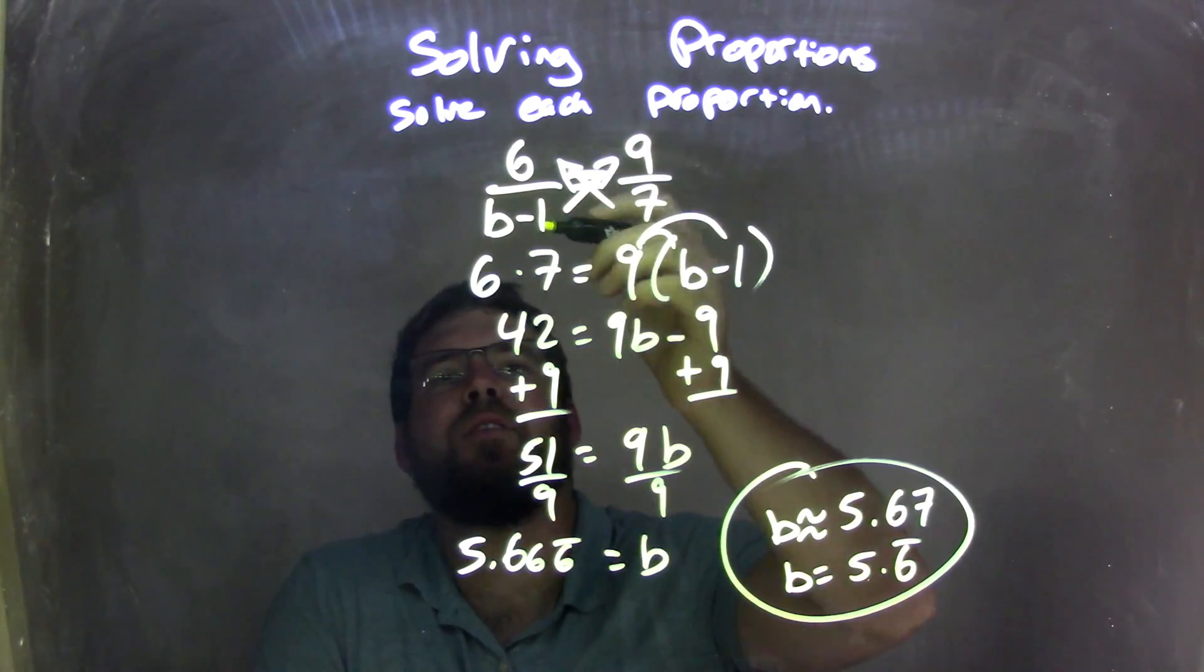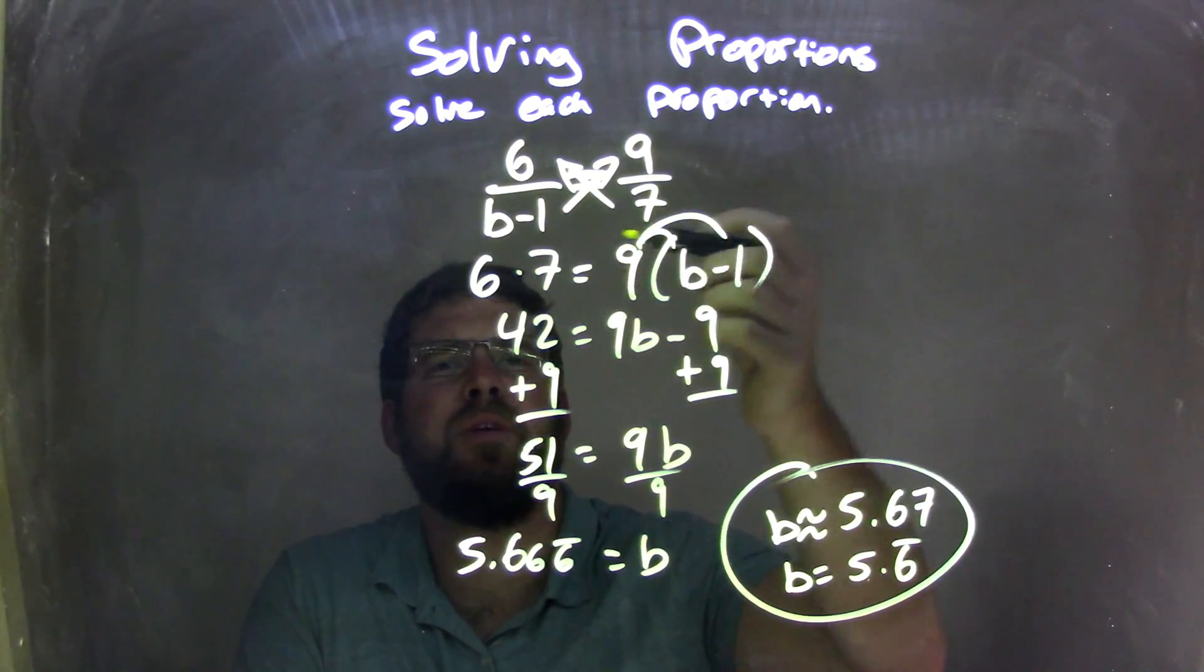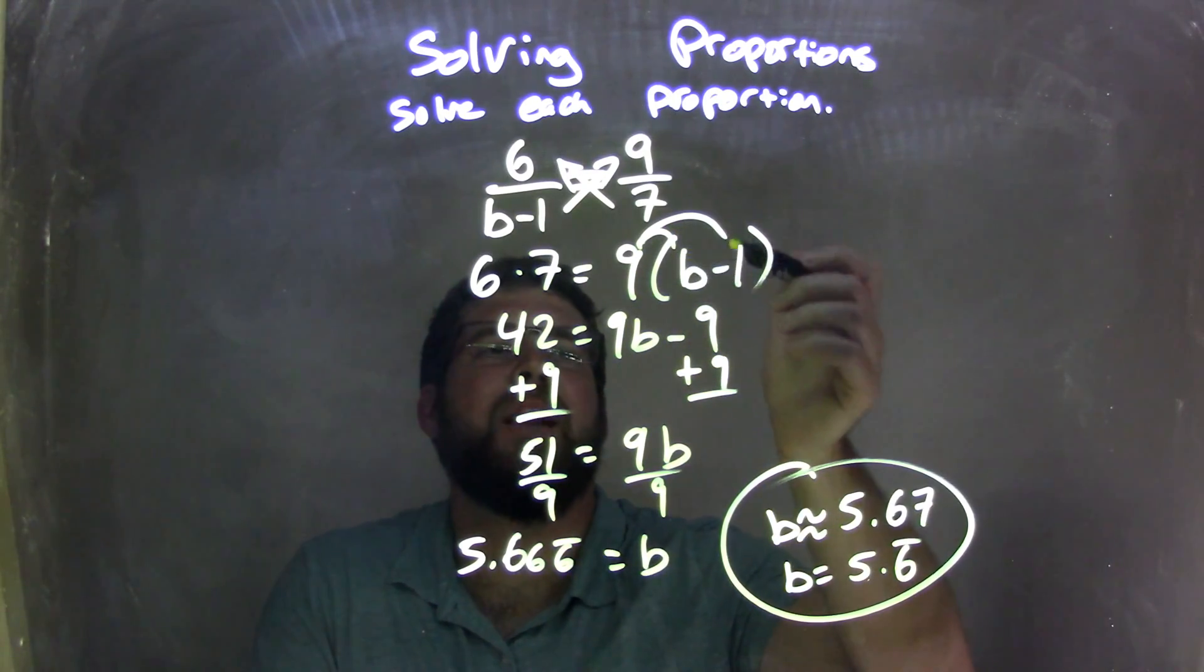So let's recap. We had 6 over b minus 1 equals 9 over 7. I cross-multiply, giving me 6 times 7 equals 9 times b minus 1.